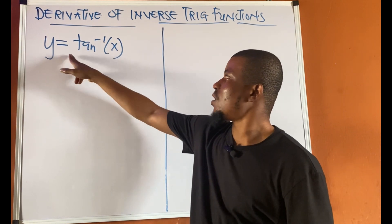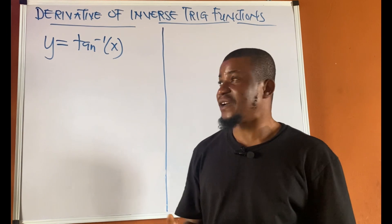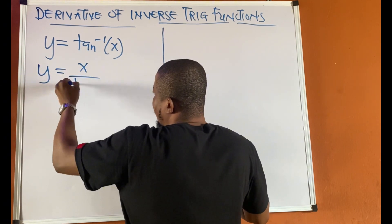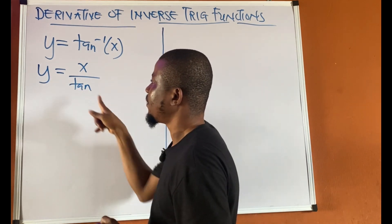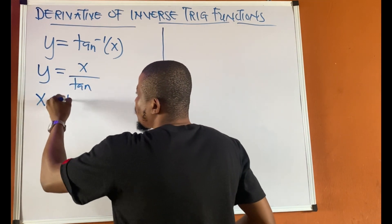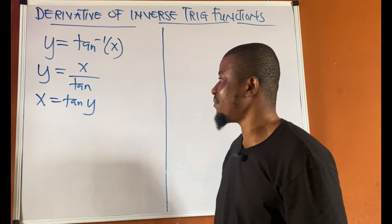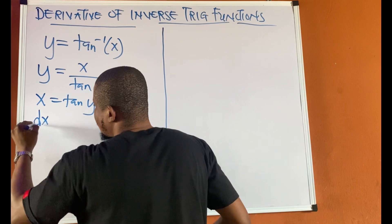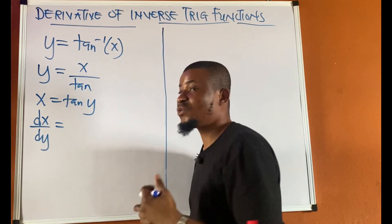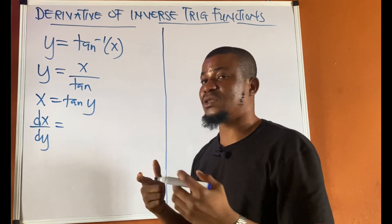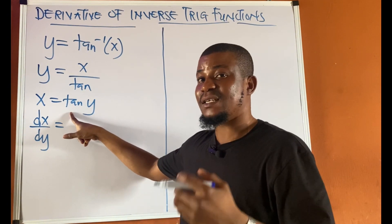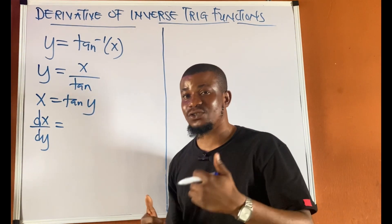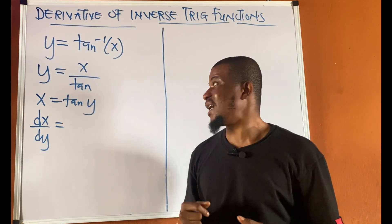Let's look at y equal to tan inverse of x. Like before, we can write this as x equal to tan y. Differentiating tan y with respect to y gives sec squared y — if you have any problem with this, check our video on the quotient rule. So dx/dy equals sec squared y, and dy/dx equals 1 upon sec squared y.